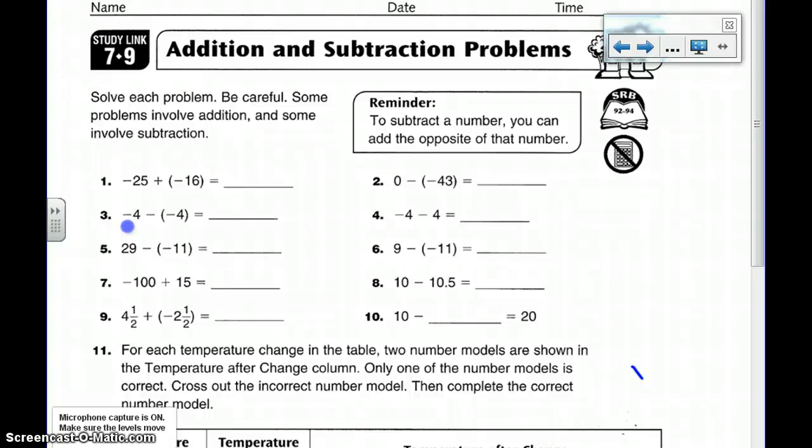So I change both signs. I change there and there. So instead of it being -4 - (-4), it's -4 + 4, which is just zero. If I have -4 and then I put in +4, I have nothing now.